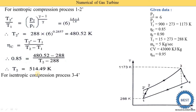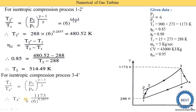Similarly, we find T4' for the isentropic expansion process (3 to 4'): T3/T4' = (P3/P4)^((γ−1)/γ), so T4' = T3 / (Rp)^((γ−1)/γ). With T3 = 1173 K, pressure ratio = 6, and exponent = 0.2857, we get T4' = 1173 / 6^0.2857 = 703.04 K.